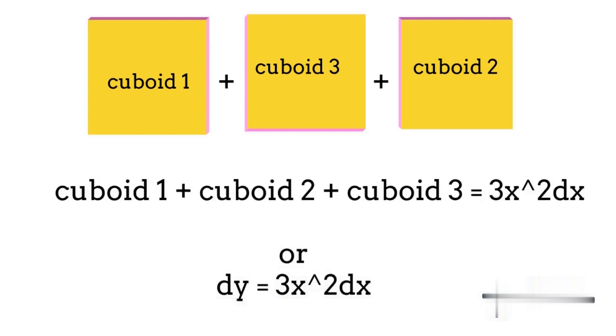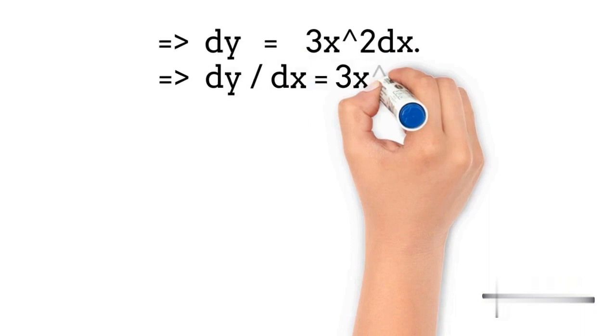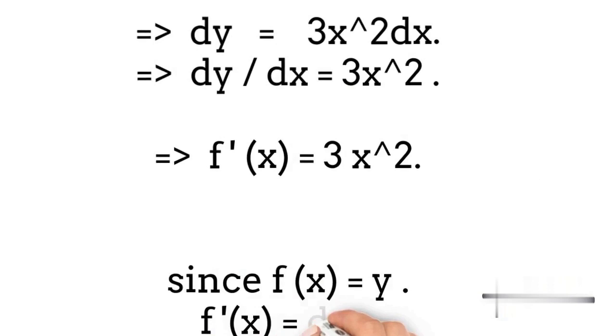We see here that total increase in volume dy due to dx is 3x squared dx. So we can say that the derivative of x cubed is 3x squared. Also, let me remind you that this derivative is denoted by dy upon dx or f'(x).